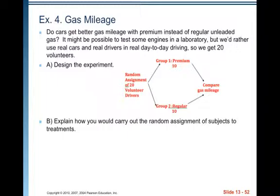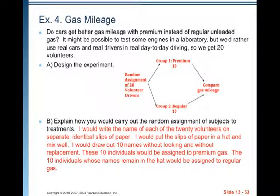To carry out the random assignment, I'll use the hat method. Write the name of each of the 20 volunteers on separate, identical slips of paper. Put the slips in a hat and mix well to randomize the selection. Draw out 10 names without looking and without replacement. These 10 individuals are assigned to premium gas; the 10 whose names remain in the hat are assigned to regular gas. Note: if you're only asked to design the experiment you don't need this level of detail, but if asked a follow-up question you need to be this specific about the assignment process.